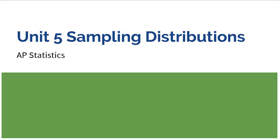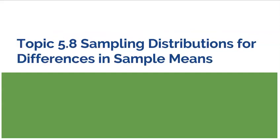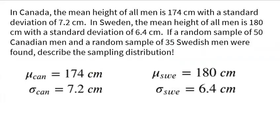Welcome to Unit 5 on sampling distributions, and in this video we are going to look at an example problem for Topic 5.8, sampling distributions for differences in sample means. Hopefully you've already learned about all this, and now we can just dive right into a problem.